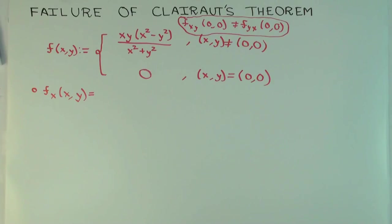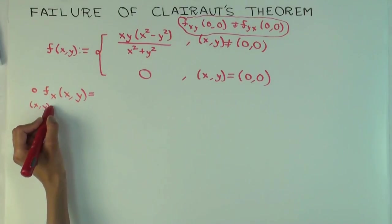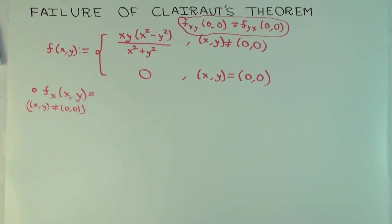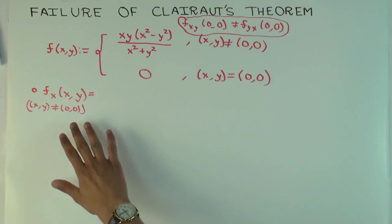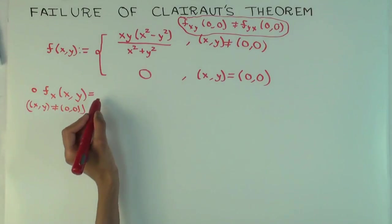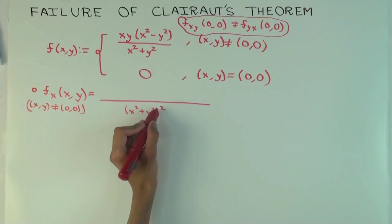So, let's first start out by calculating f sub x of (x,y), where (x,y) is not (0,0). Okay? So, we are excluding the case (0,0), because for the case (0,0), we have to think about it separately. Okay, what is f sub x of (x,y)? So, you have to use the quotient rule. So, what do you get downstairs? Squared of x squared, y squared.